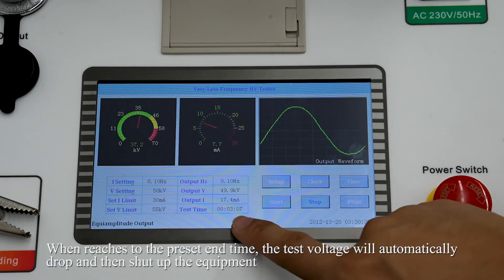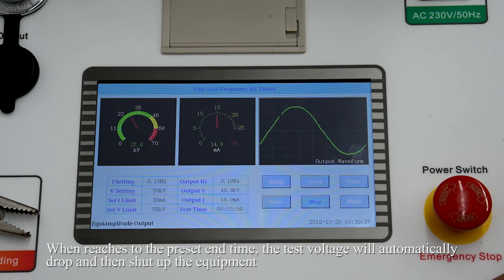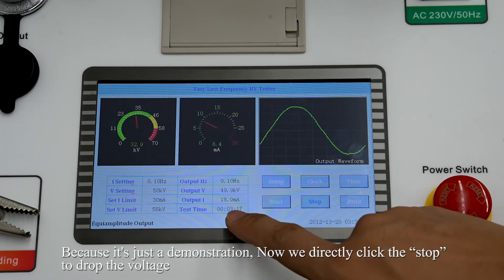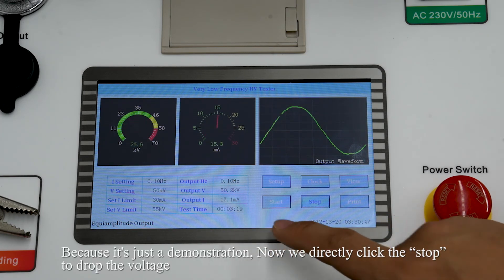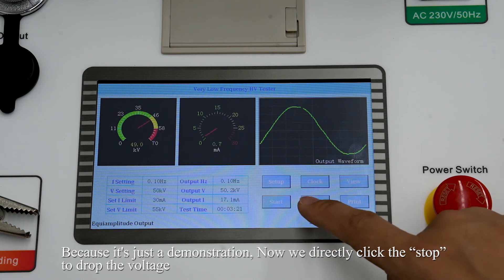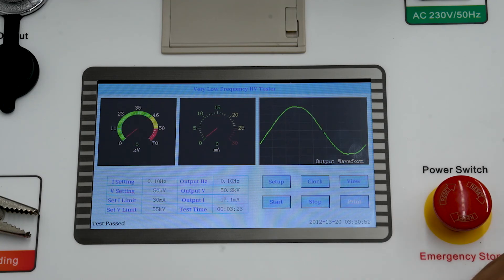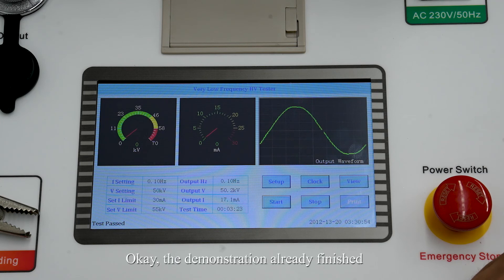When voltage is to the preset end time, the test voltage will automatically drop, and then the equipment stops. Because it is just a demonstration, now we directly click stop to drop the voltage. Okay, the demonstration already finished.